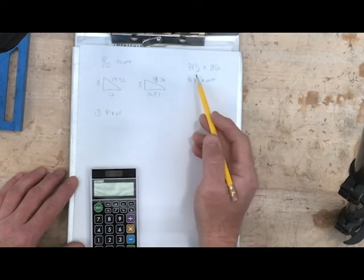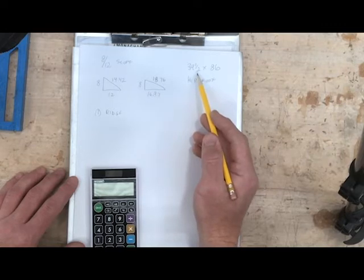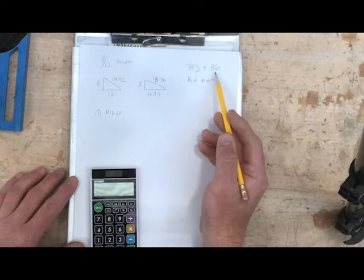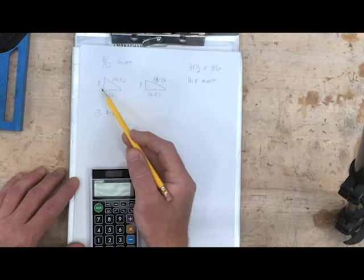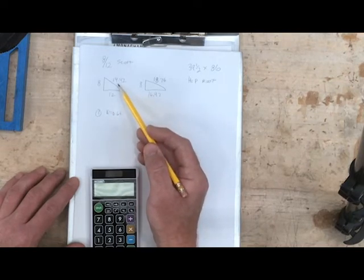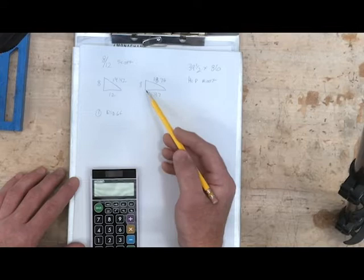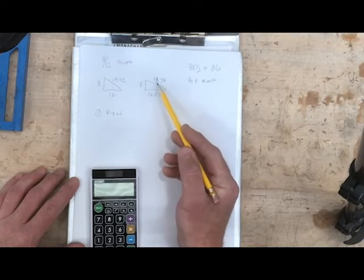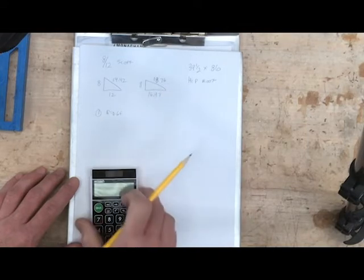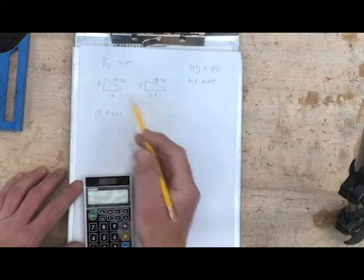Our roof is small. It's 39.5 inches wide by 86 inches long. The math I've done already for the 12-12: the unit line length for a common is 14.42, and for a hip or valley is 18.76. We will have talked about all that in class and how to get those numbers.